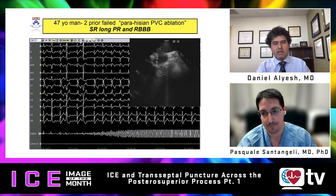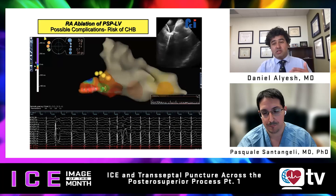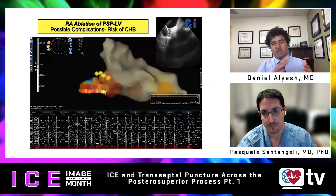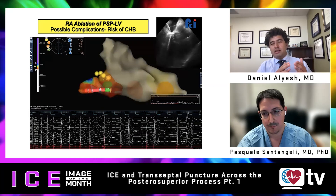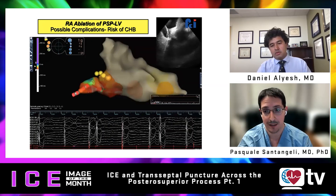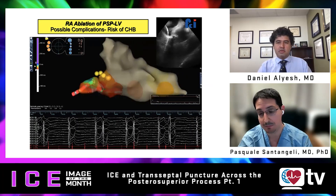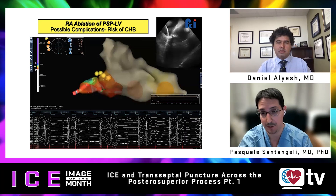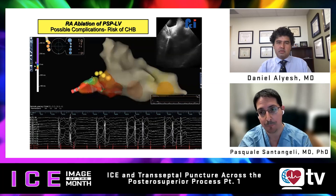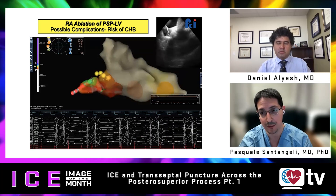This next tracing shows transient heart block associated with ablation in this region. Regarding safety parameters and the role of ICE: this was a case done by colleague Luis Saenz from Fundacion Cardioinfantil in Bogota, collaborating with us. On intracardiac echo, the catheter was against the posterior septal process near the coronary sinus.